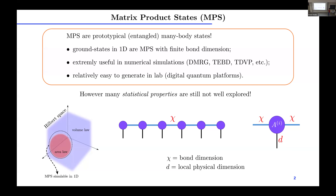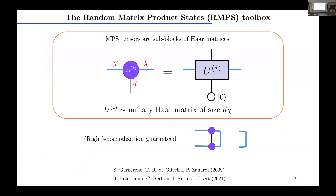With the bond dimension of this link represented by chi, we often consider a generic local physical dimension. We are interested in statistical properties, so we need to assign a probability measure to each tensor. For practical purposes, it's useful to take each MPS tensor to be a sub-block of a unitary matrix. This guarantees right normalization of the MPS.